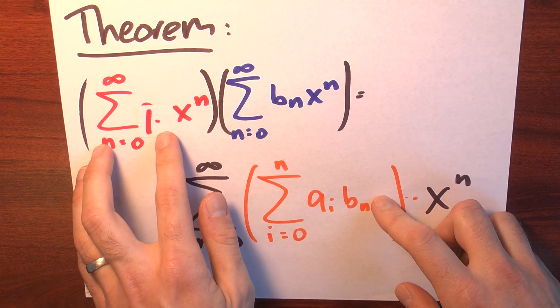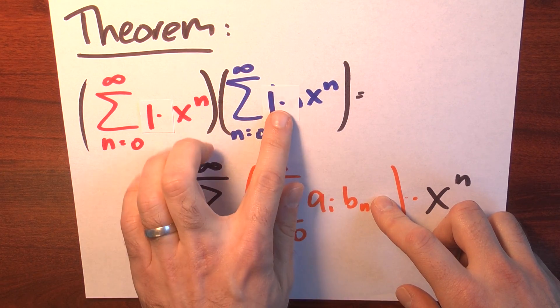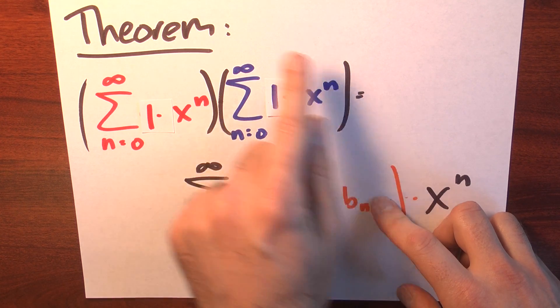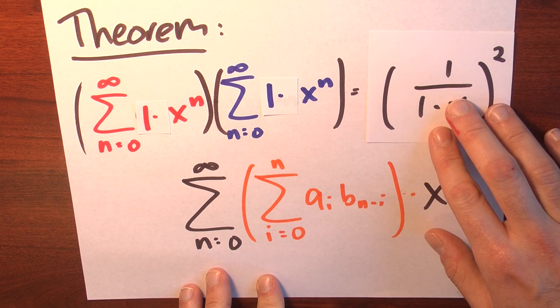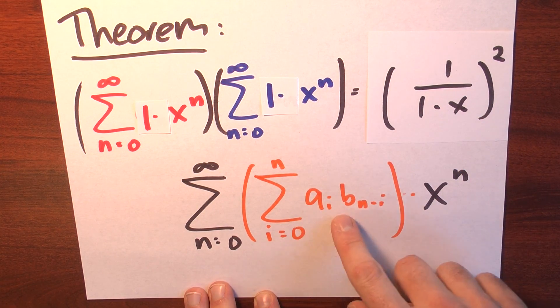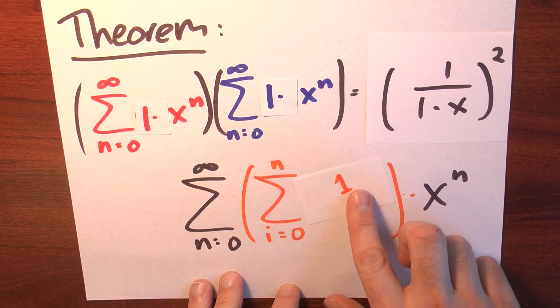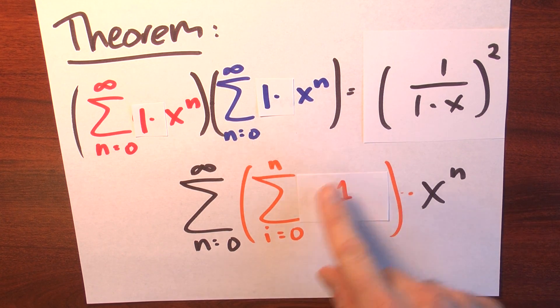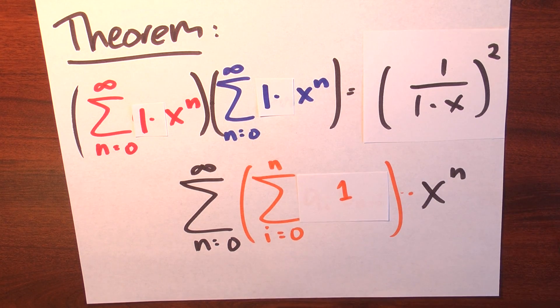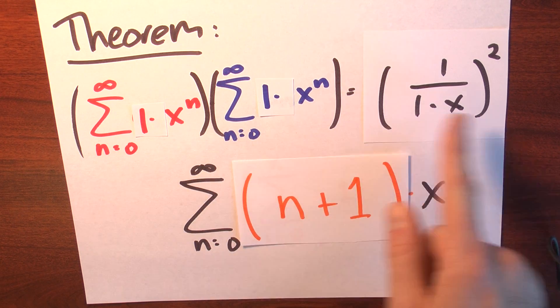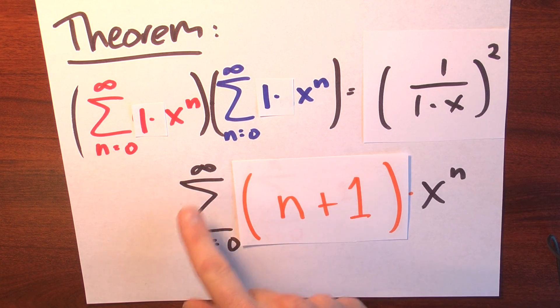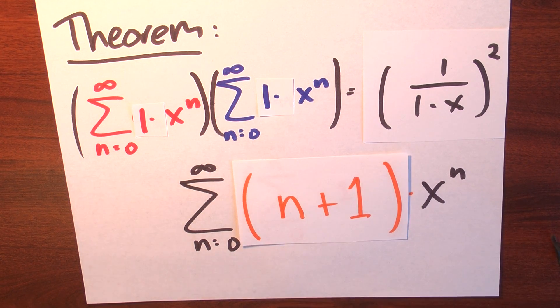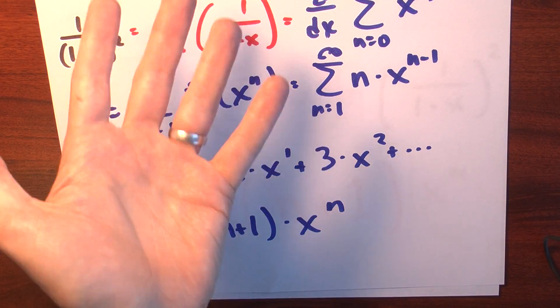We can apply that theorem. In this case, our formula for 1 over 1 minus x has all coefficients equal to 1. So if I multiply 1 over 1 minus x by 1 over 1 minus x, I get 1 over 1 minus x squared, where all the a sub i's and b sub n minus i's are just 1. The sum i goes from 0 to n of just 1 is n plus 1 ones. So I can rewrite this power series as the sum n goes from 0 to infinity of n plus 1 times x to the n. And that's exactly what we got before by using derivatives.